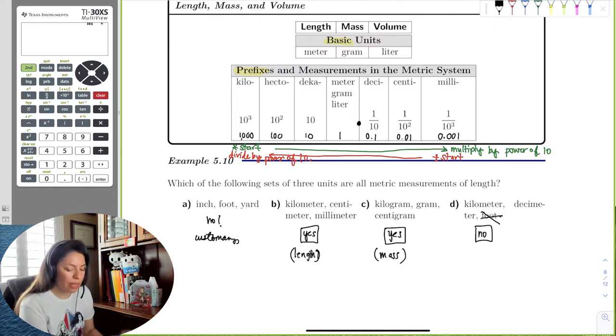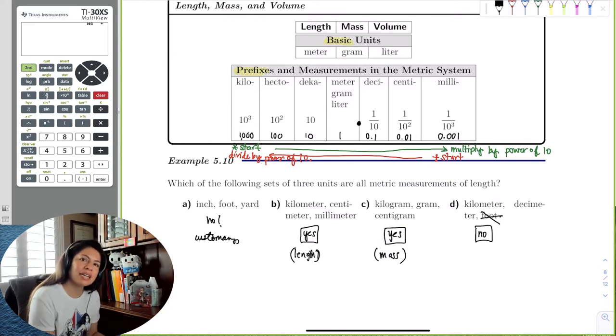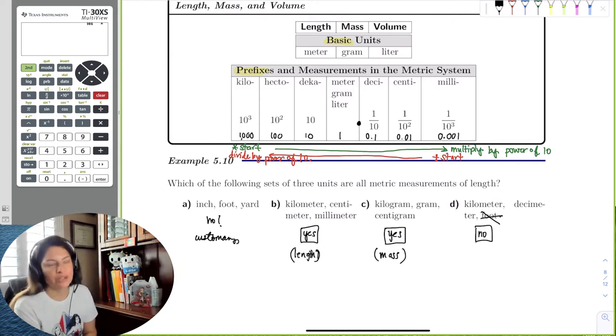How about kilometer, decimeter, and foot? You're like, hmm, foot, those are all length, but foot is not metric. So no. In order, all metric measurements are always going to be meter, gram, liter. So you can't have foot meter or pound gram. It's either going to be U.S. customary units or the metric system.